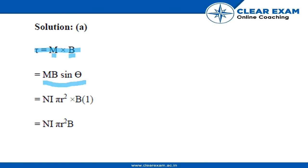The magnetic moment is NIπr² × B × sin 90°, which equals NIπr²B. So the answer is NIπr²B, which is option A.